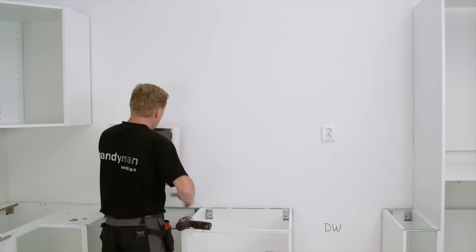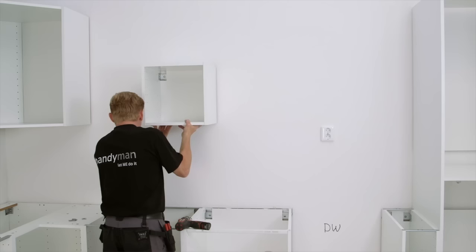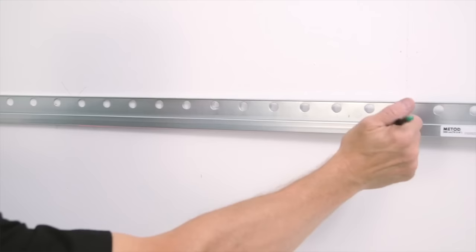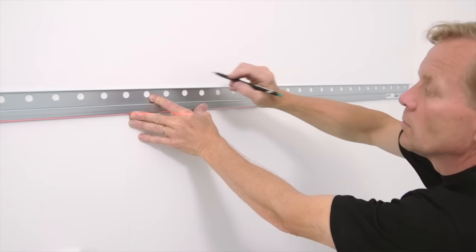Note that some cabinets are not made to be mounted on the rail. We will show you how to install them in chapter three. It is important to have no more than 30 centimetres distance between each screw to ensure the bearing capacity of the rail.